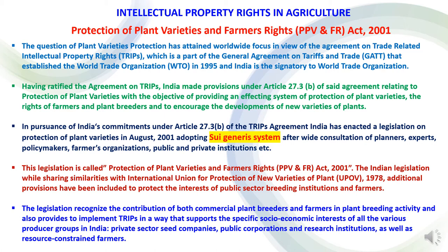The legislation is called the Protection of Plant Varieties and Farmers Rights Act. The Indian legislation, while sharing similarities with the International Union for Protection of New Varieties of Plants, includes additional provisions to protect the interest of public sector breeding institutions and farmers. The legislation recognizes the contribution of both commercial plant breeders and farmers in plant breeding activity, and also provides to implement TRIPS in a way that supports the specific socio-economic interest of all various producer groups in India — private sector, seed companies, public corporations and research institutions, as well as resource-constrained farmers.